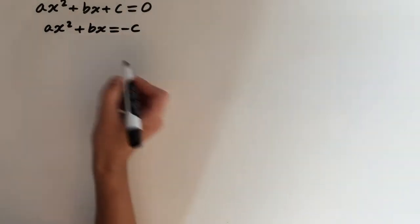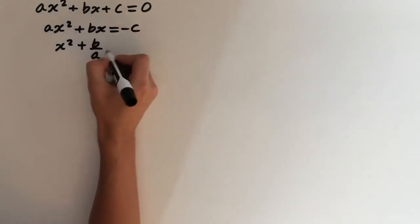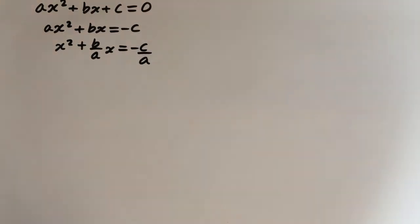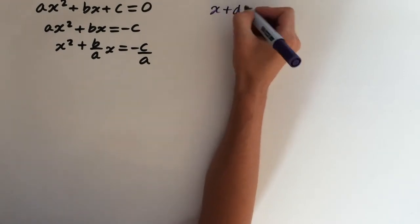And then divide every term by a. So now we want to complete the square. First, let's look at what happens when we expand x plus d all squared.